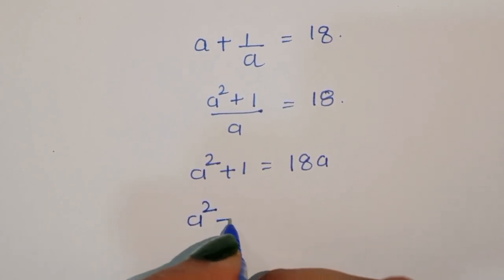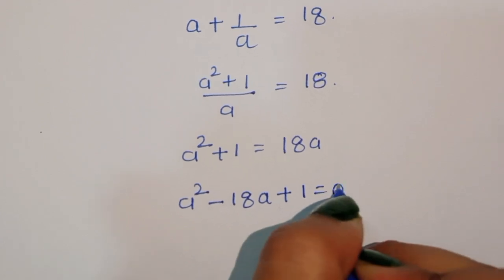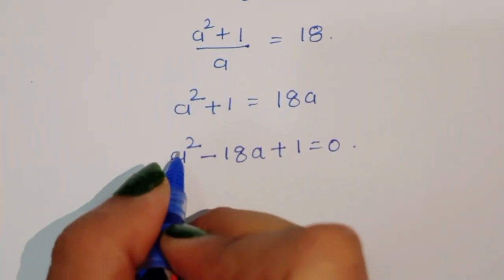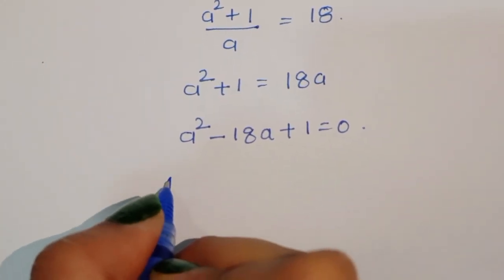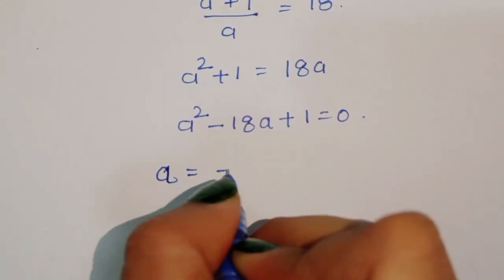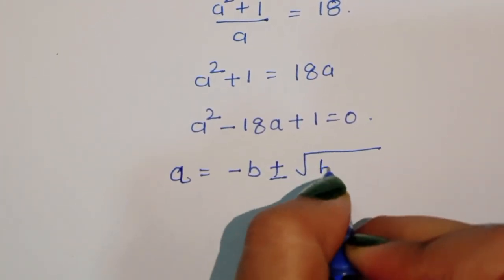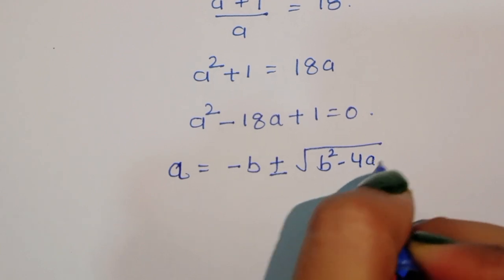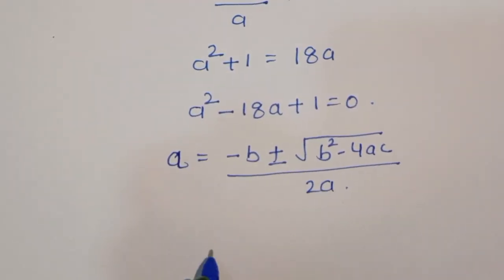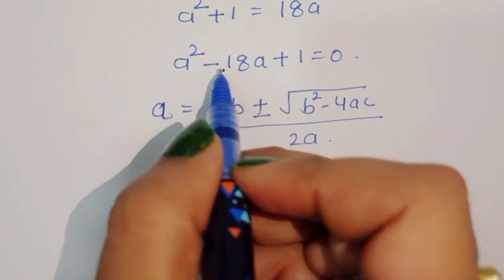By cross multiplication we can write a squared minus 18a plus 1 is equal to 0. Now the coefficient of a squared is 1, so we can apply the quadratic formula: a is equal to minus b plus or minus square root of b squared minus 4ac, all divided by 2a.